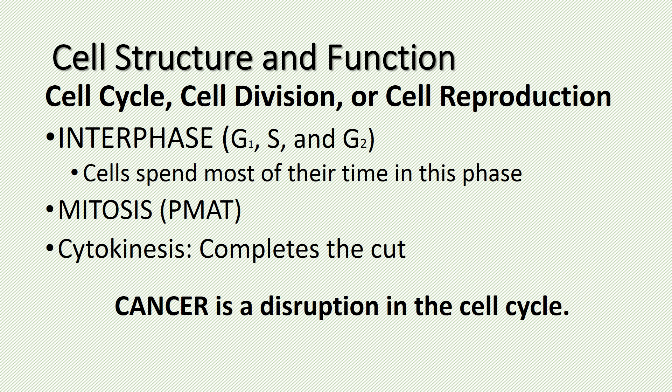The cell cycle, also known as cellular division or cellular reproduction, is made up of six steps: I, PMAT, C. Interphase, which is composed of G1, S, and G2, is the longest phase and where the cell spends most of the time. Don't forget, DNA is replicated in the S or synthesis phase of interphase.